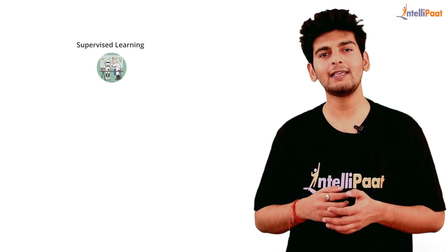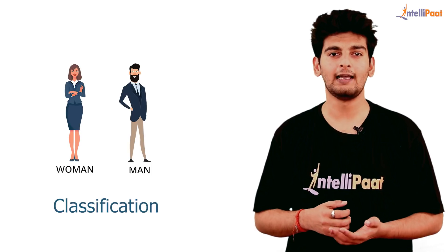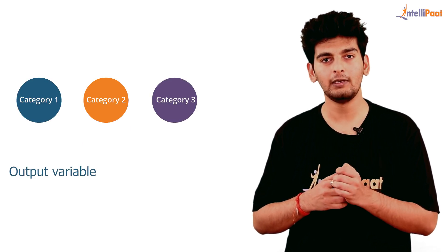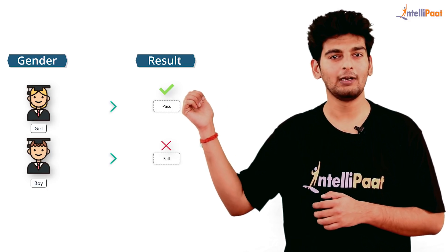Now again, supervised learning can be divided into regression and classification. So let's start with classification. So in classification, the output variable is categorical in nature. So let's take this example to understand it better.